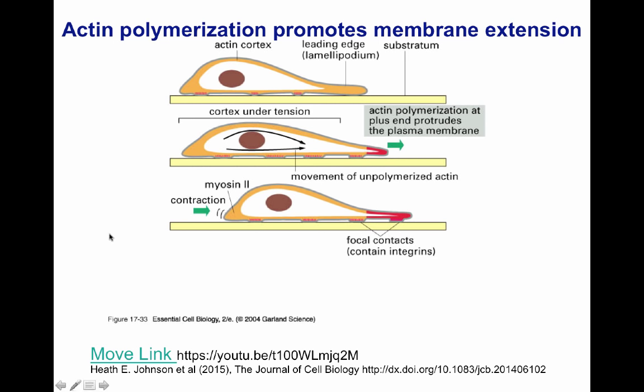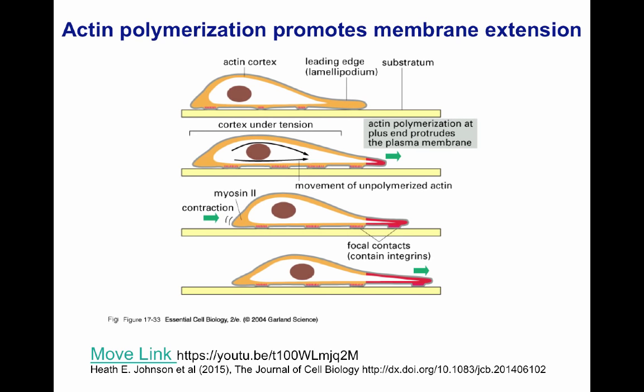At the same time, at the rear of the cell, myosin proteins work to contract the tail end of the cell. At the front, the membrane is making new focal contacts with the substrate, mediated by integrins that allow it to bind directly to the substrate. This results in extension of the membrane forward.